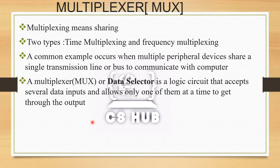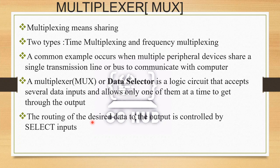A multiplexer has a single output line. It is a 2-raised-to-n to 1 device, meaning it takes input from several data lines and allows only one of them at a time to pass to the output. Routing of the desired data to the output is controlled by select inputs, also called control lines, which determine which input is passed to the output.